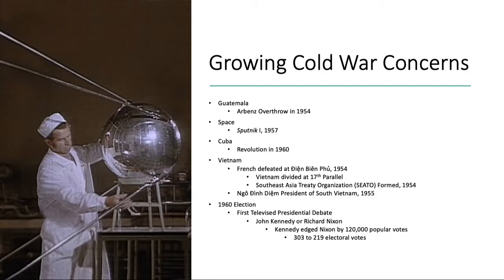In Cuba, communism won the day when Fidel Castro launched the Cuban Revolution in 1960. In Vietnam, the French were defeated at Dien Bien Phu in 1954. While Vietnam remained divided between North and South at the 17th parallel, the United States participated in the creation of the Southeast Asia Treaty Organization, SEATO, to help maintain that division. A U.S.-friendly leader, Ngo Dinh Diem, was installed in South Vietnam in 1955.